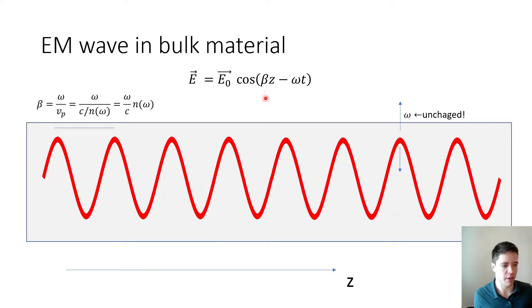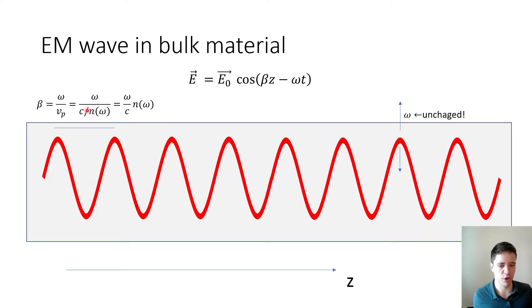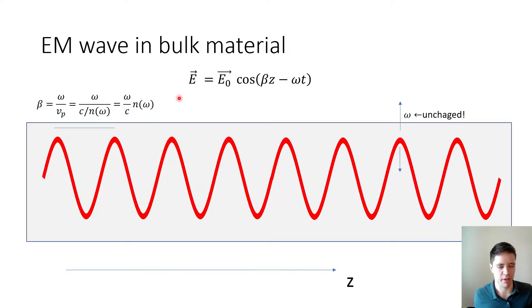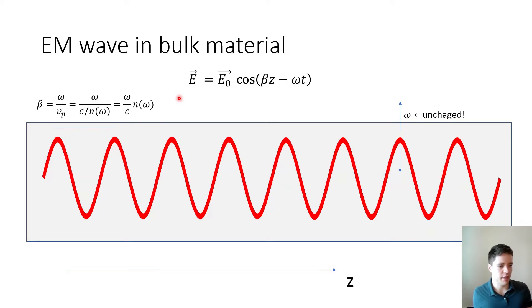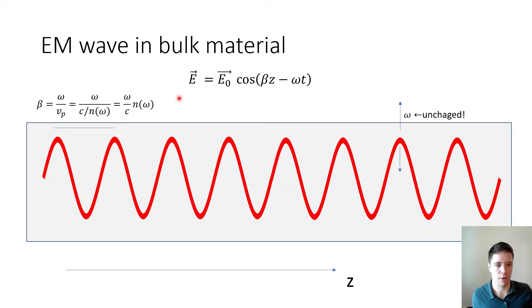Instead of writing k0 we now write beta to indicate it has changed inside the material. The reason this happens is that the speed of light is slower inside a material compared to vacuum, so beta equals omega over c multiplied by the refractive index. The interesting thing is that the refractive index depends on the color of the light — the optical frequency — and therefore different colors of light will not only wiggle at different rates but also propagate at different speeds and with different spatial frequencies.